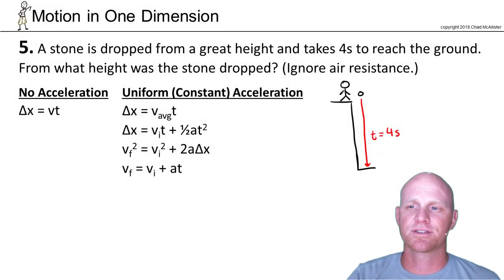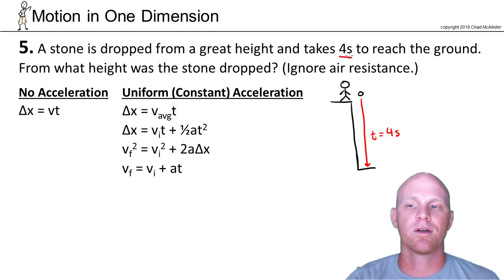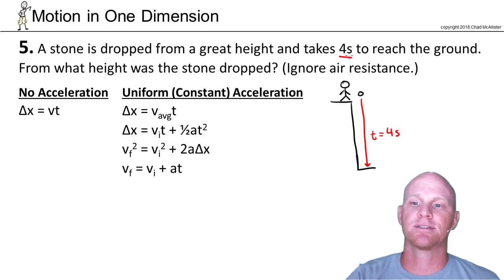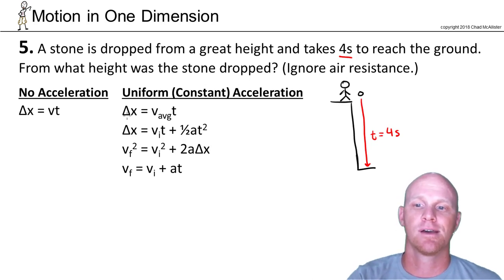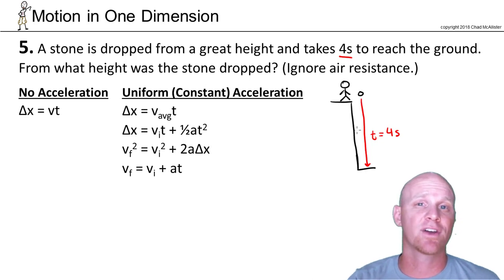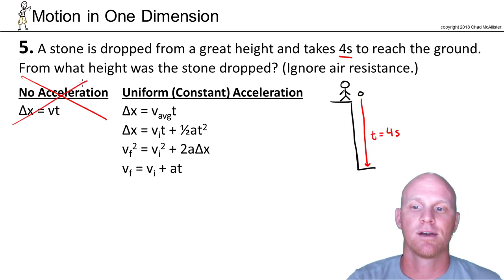Question number five says that a stone is dropped from a great height, and it takes four seconds to reach the ground. From what height was the stone dropped? Ignore air resistance. We're solving for displacement. Gravity is acting on this stone the entire time as we have a vertical displacement. Since we have an acceleration, the first equation will do us no good.